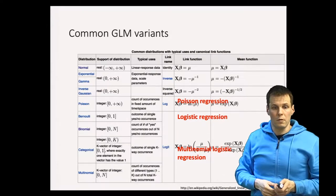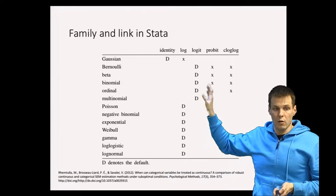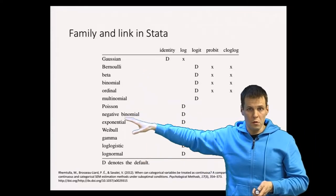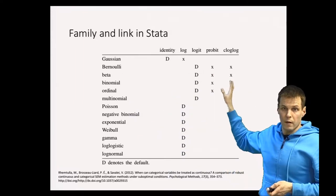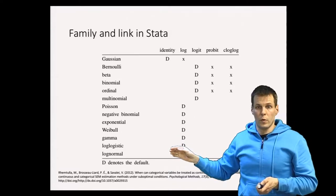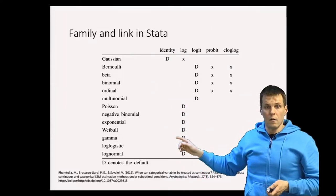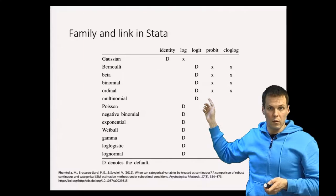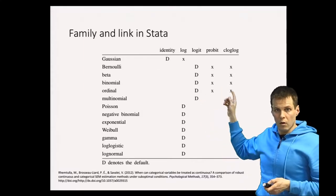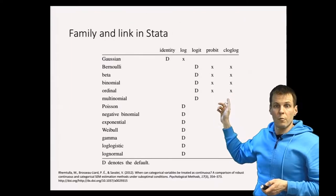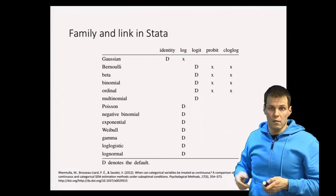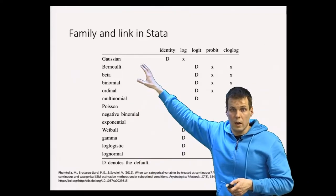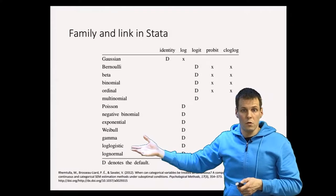Stata supports many of these distributions. There are about 15 different distributions, and some distributions can be used with multiple different links. Typically when you choose a distribution there is one default link, and the choice between logit and probit link has very little consequence on the results. So the question of which GLM to use boils down to choosing a distribution based on the phenomenon you're studying.